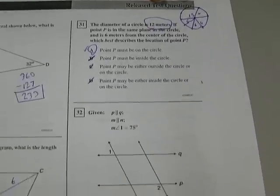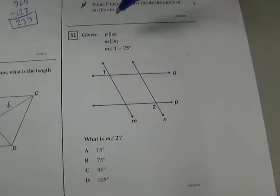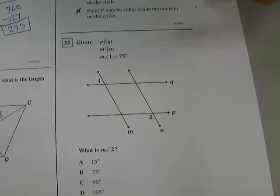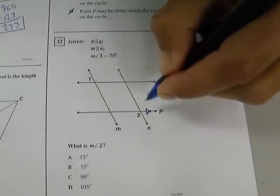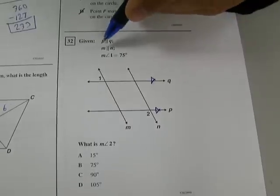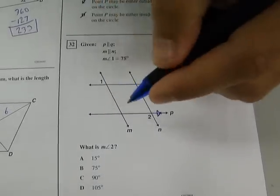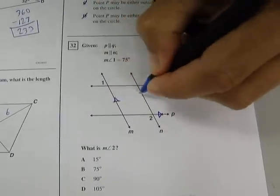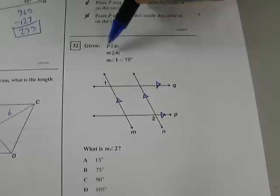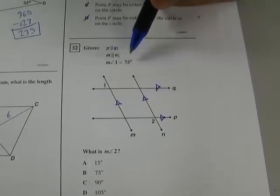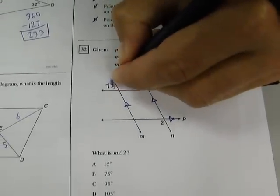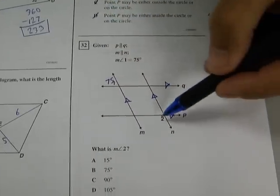Last one. Number 32. Given P is parallel to Q. Let's mark them parallel. So they're parallel. And M is parallel to N. So these are also parallel. Okay. And the measure of angle one equals 75. So let's write this right away. It says find the measure of angle two.